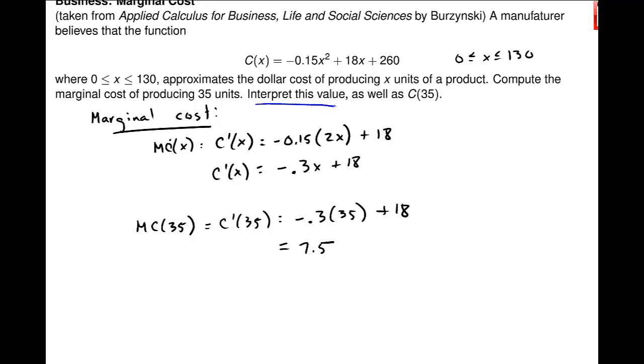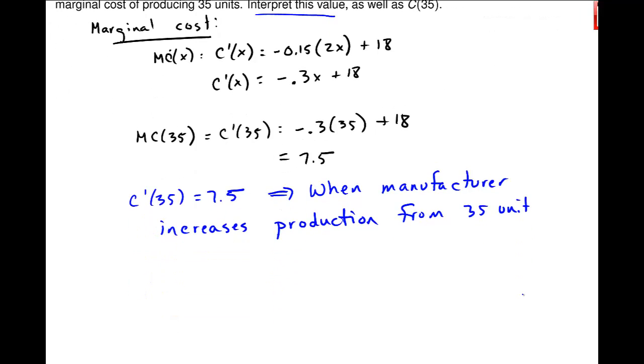So let's talk about then what that means. Interpret that value. So C prime of 35 equals 7.5. This means when the manufacturer increases production, this is a one unit increase, from 35 units to 36 units, he will see an increase in cost of $7.50. This marginal cost that we saw. That's the increase of the cost.